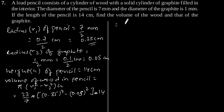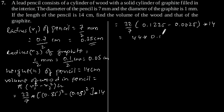This is equal to 22 by 7. This will give 0.1225 minus 0.0025 into 14. This is equal to 44 into 0.12 which is equal to 5.28 cm³. So, the volume of the wood in pencil is 5.28 cm³.